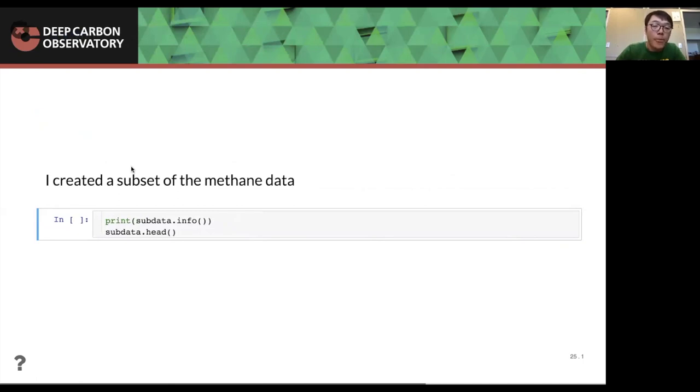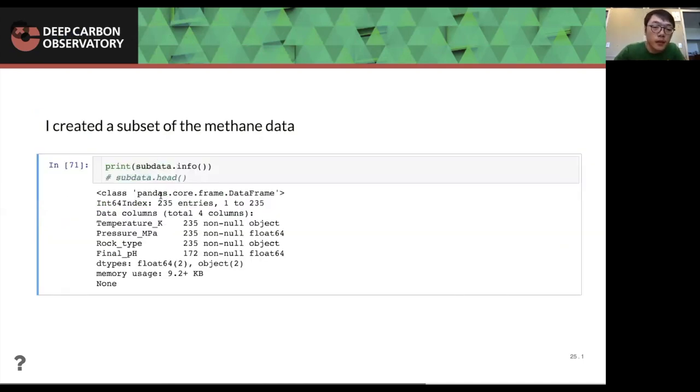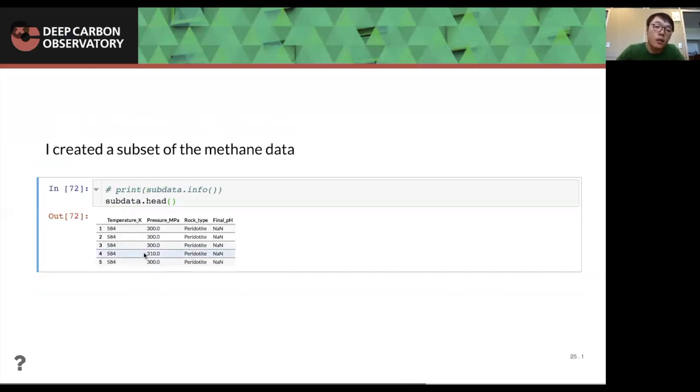And here I have created a subset of the methane data. So we will see is called the sub data. In the sub data, we have four columns and temperature K, pressure, rock type, and the final pH. And you can see that pressure is in float format, but temperature is in object format, which means temperature is, there is something wrong with the temperature. And also, we will deal with that. And also we can see that there are some missing values in final pH because, you know, it has like 60 less values other than the for us, for other three other columns. So we can see these are the top five rows of this sample. These are, and then, and then are missing values.